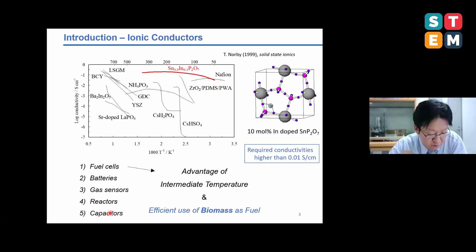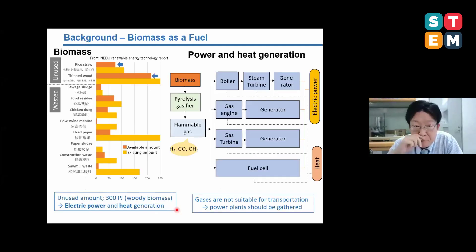Taking advantages of high temperature operation, we are focusing on the efficient use of biomass as an environmental-friendly energy material. Among several biomass, rice straw and thin-woods are classified as unused biomass, and the amount of them is estimated 300 petajoules in Japan.